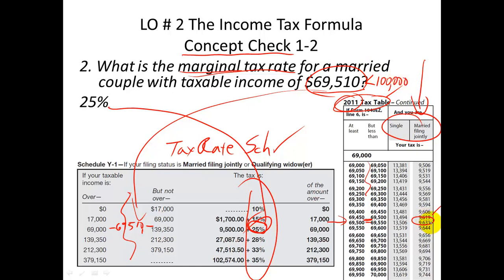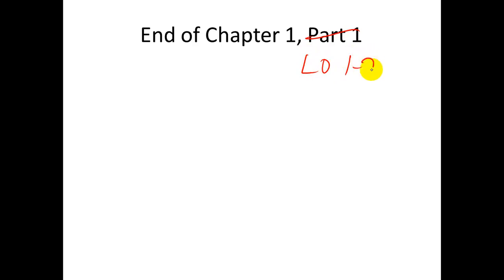Now I have my tax: $9,631. If I take that tax and divide it by my taxable income — my base — the answer gives you the average tax rate, not the marginal rate, but the average rate. So this is the end of Learning Objective 1-2.